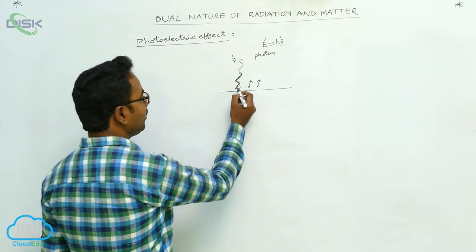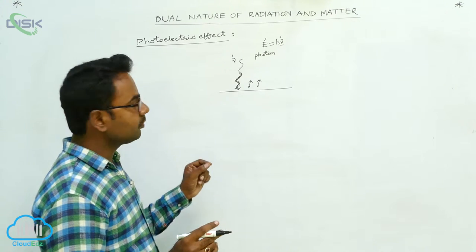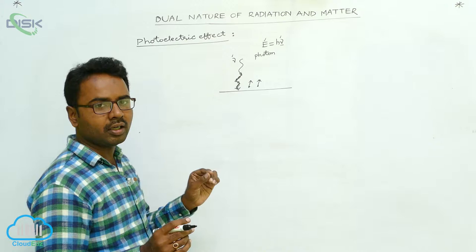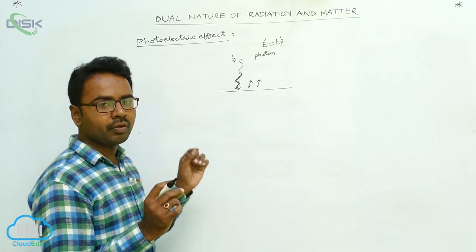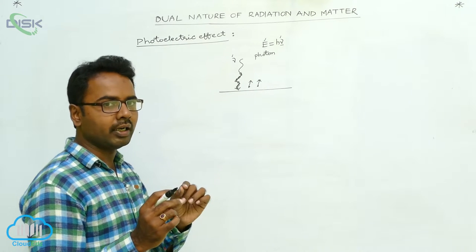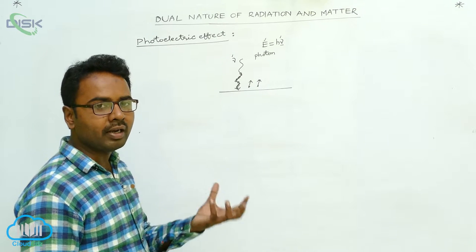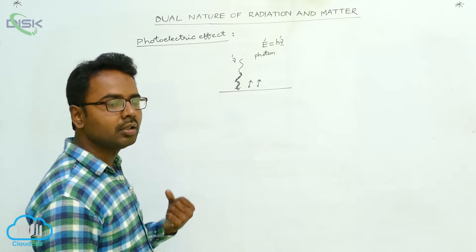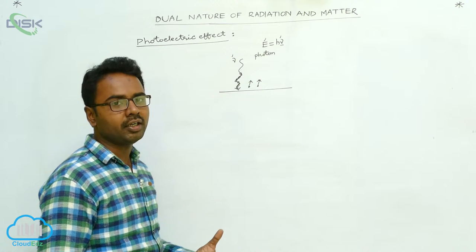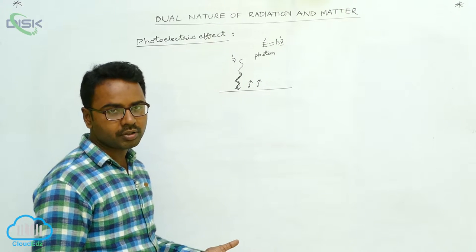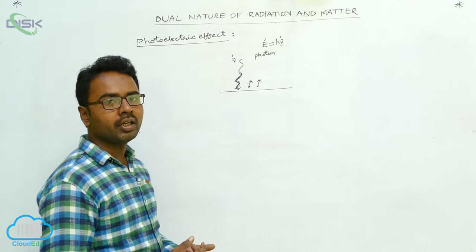When light is incident on the metal surface, the photons interact with the electrons in a one-to-one process — one photon collides with one electron. The photon gives up its energy to the electron, and the electron gains that energy. If the energy of the photon is sufficient, the electron can come out from the metal surface; if not, it cannot come out and may only rise from one energy level to another inside the atom.